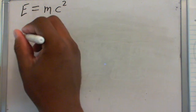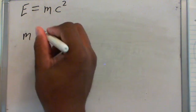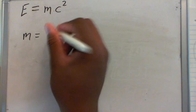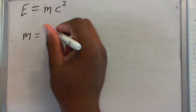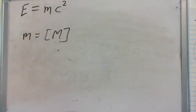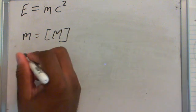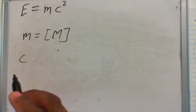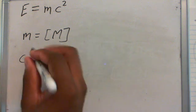Let's look at the MC part first, MC squared. M equals mass, of course, and M is M in brackets. C is just a velocity, it's a specific velocity, but all it is is a velocity.